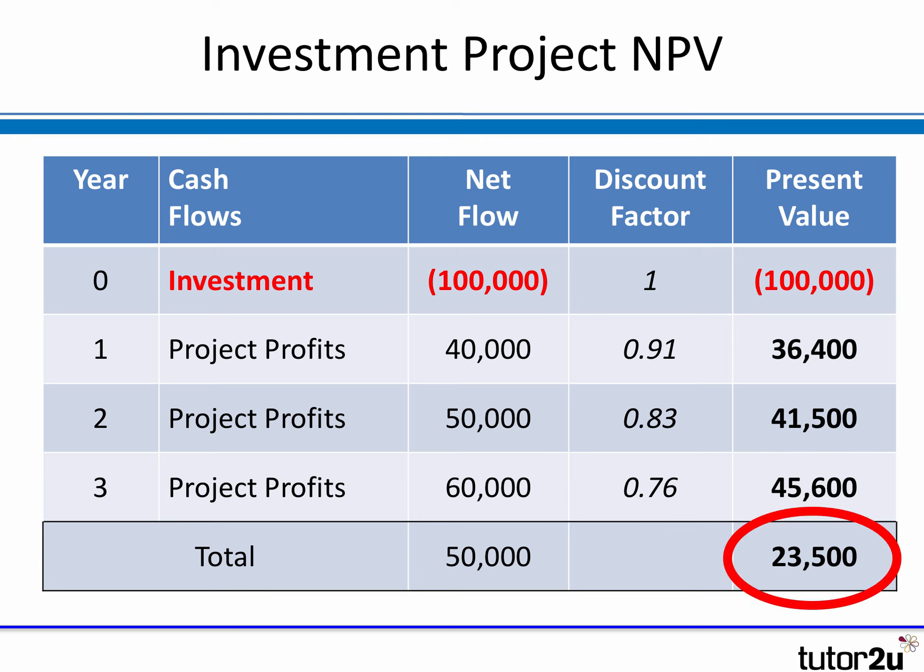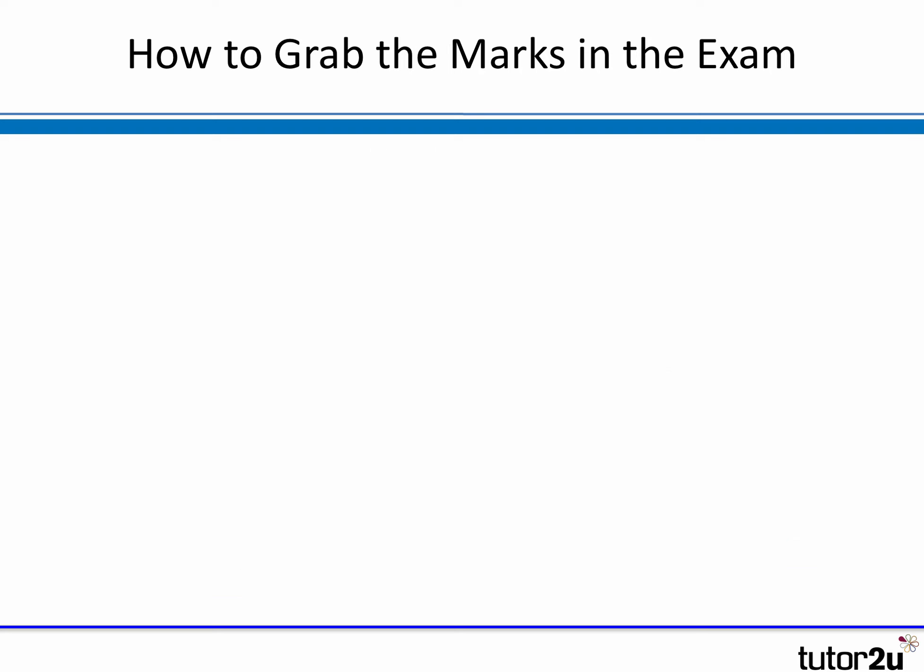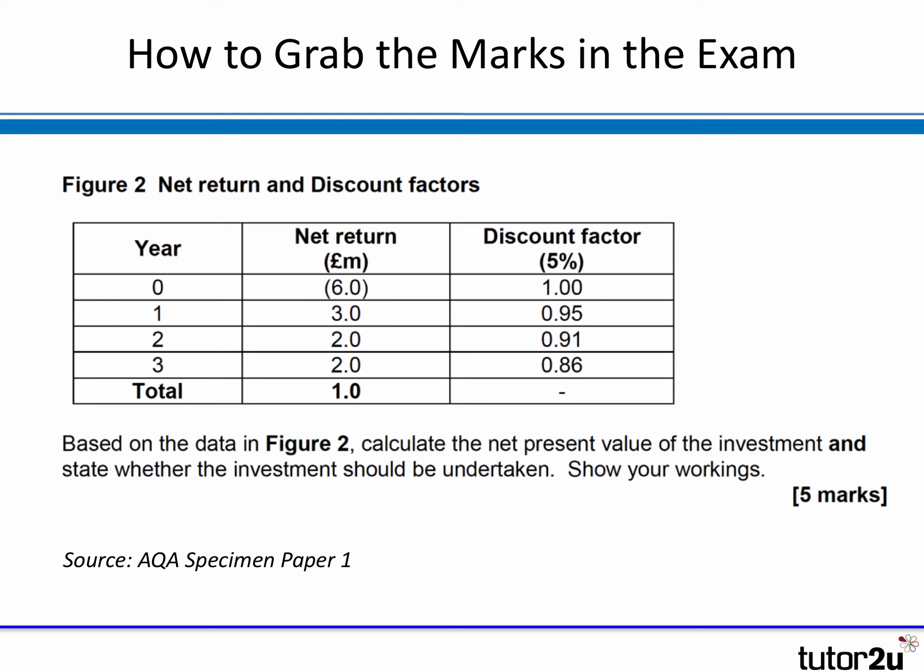Now a quick word about how to grab marks in the exam. On screen is a typical exam question taken from one of the new A-level sample papers. It's very similar to the last exercise: a three-year project, some returns, an outflow at time zero, and discount factors that you are encouraged to apply to those cash flows.